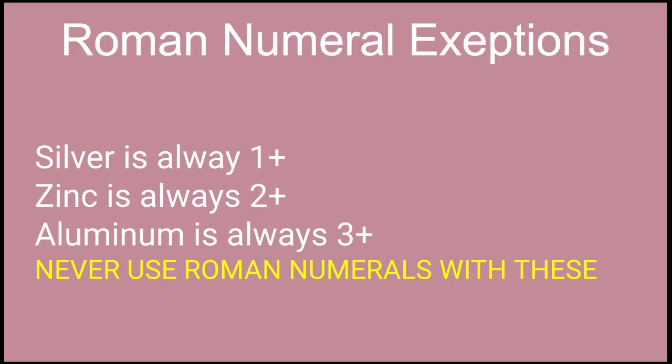There are some exceptions, so there are some transition metals and post-transition metals that absolutely never will have more than one version. We only are using Roman numerals because we have elements that have more than one possible charge. However, silver, zinc, and aluminum only ever will have one possible charge.